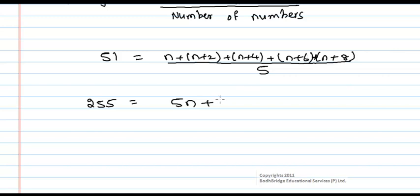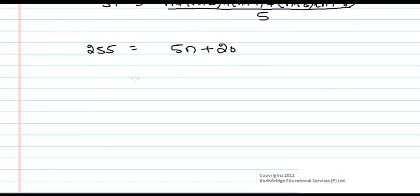5n equals 235 divided by 5. So n equals 47.